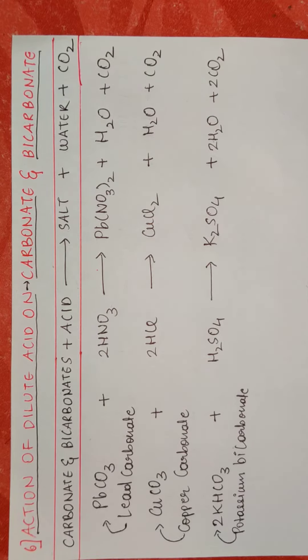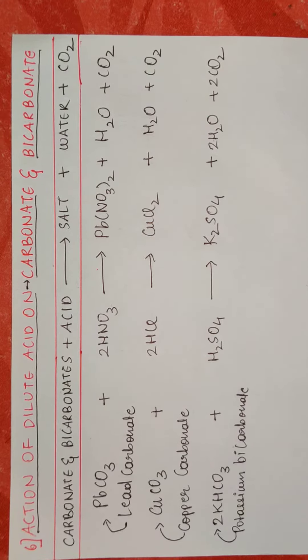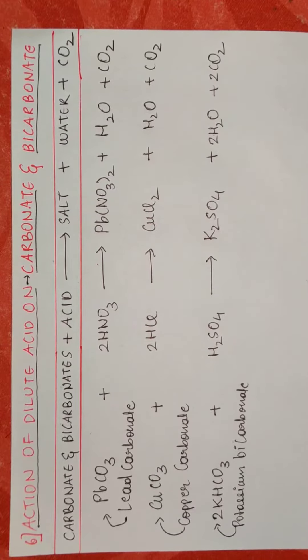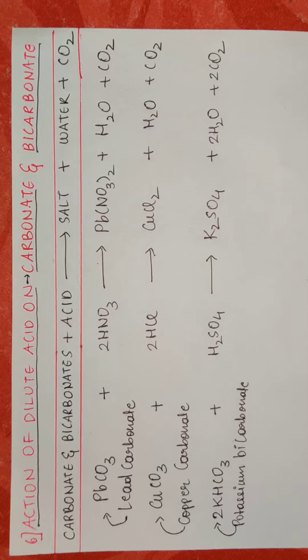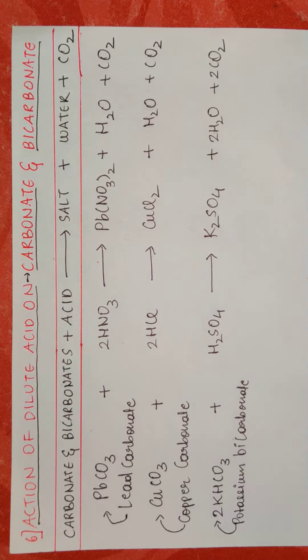Okay class, coming to the last classification: action of dilute acid on carbonate and bicarbonate. What does the general reaction mean? Carbonate and bicarbonate when reacted with acid will produce salt, water, and carbon dioxide.